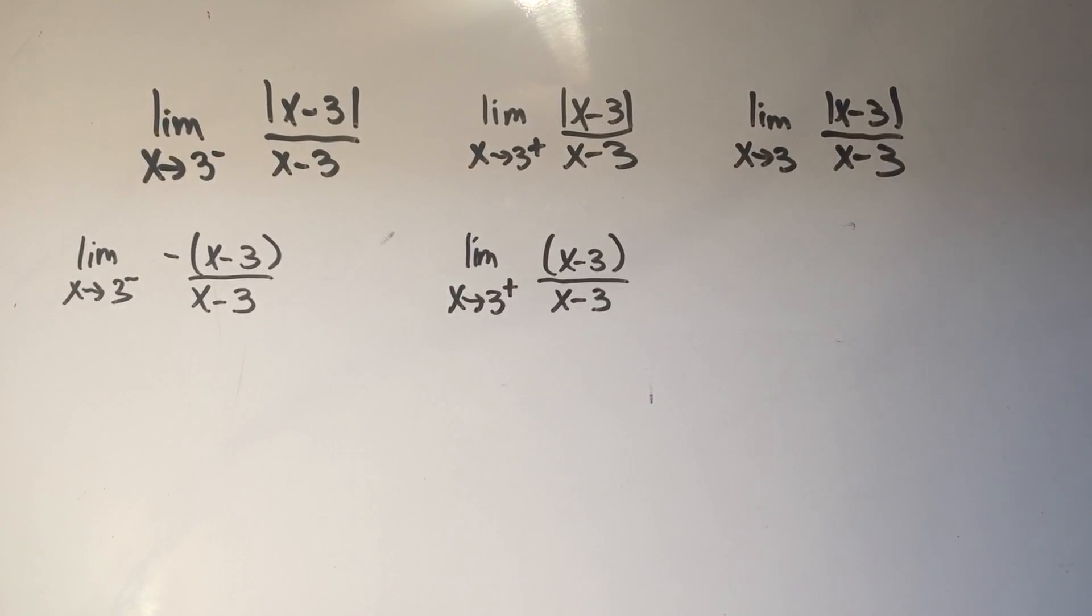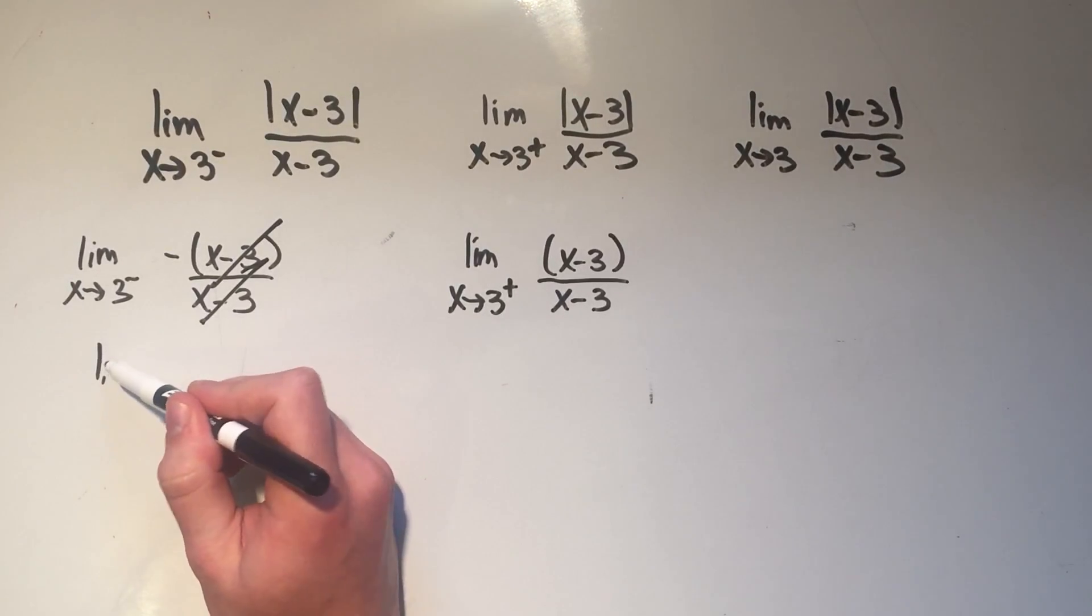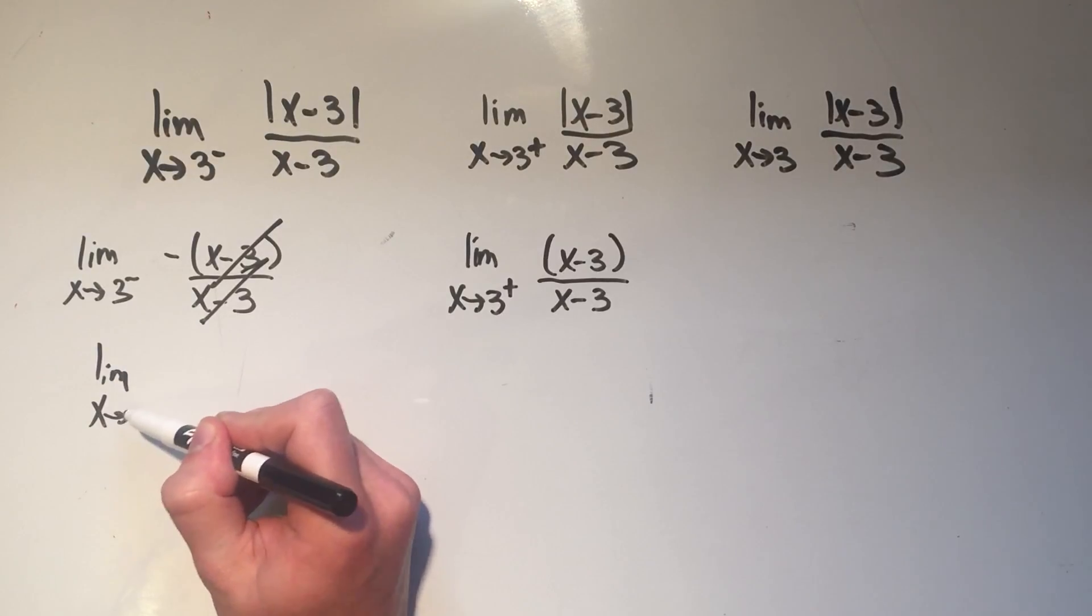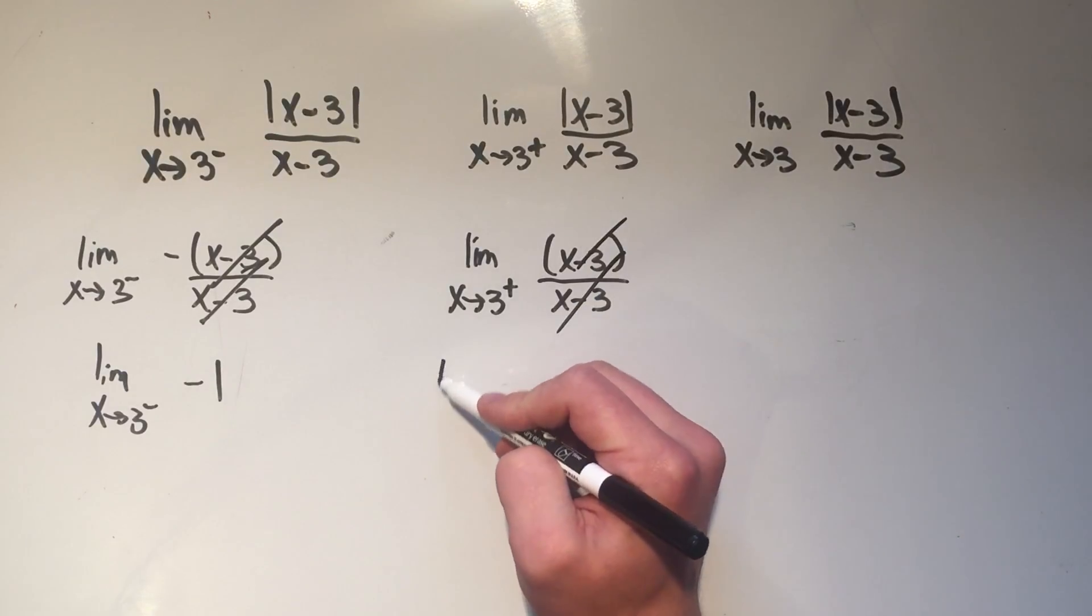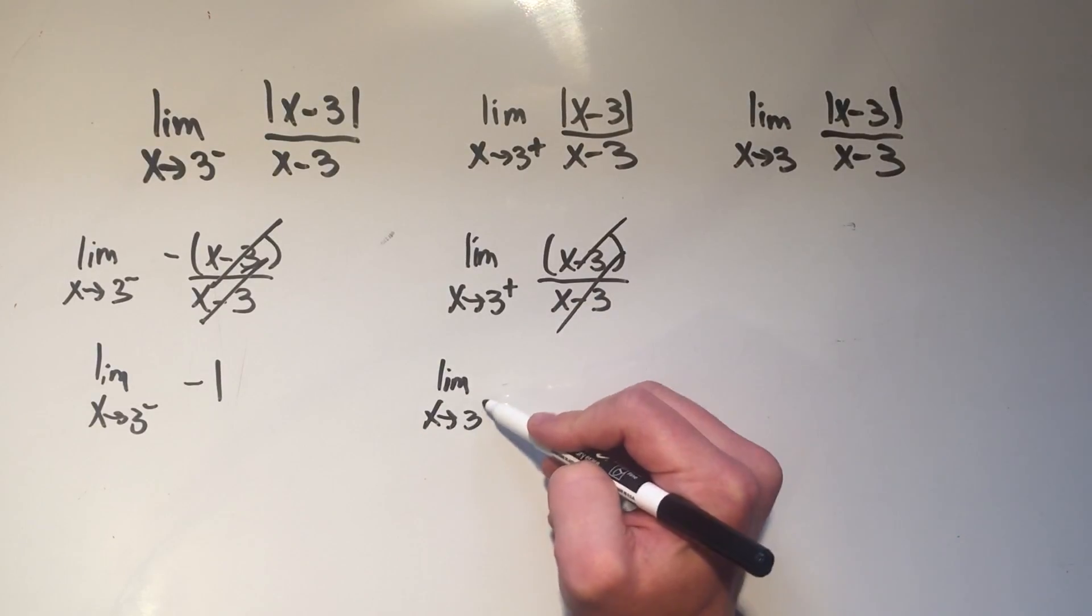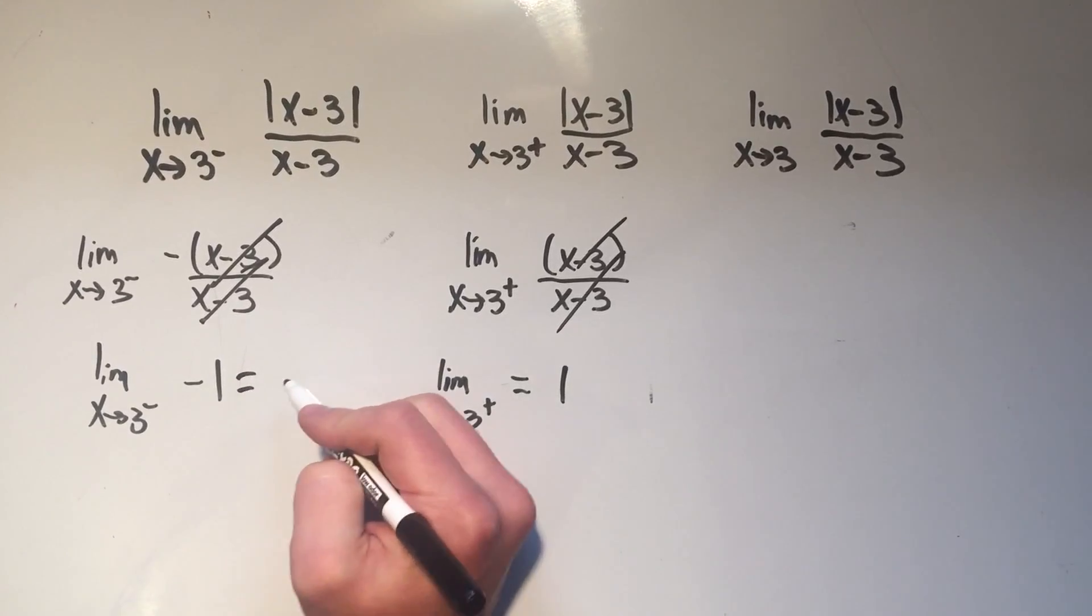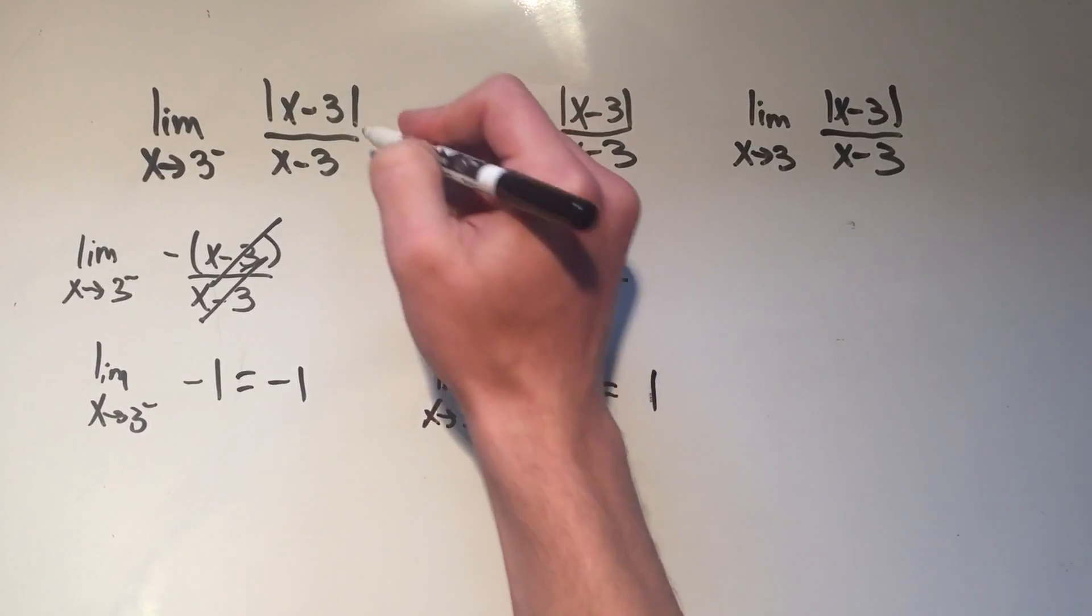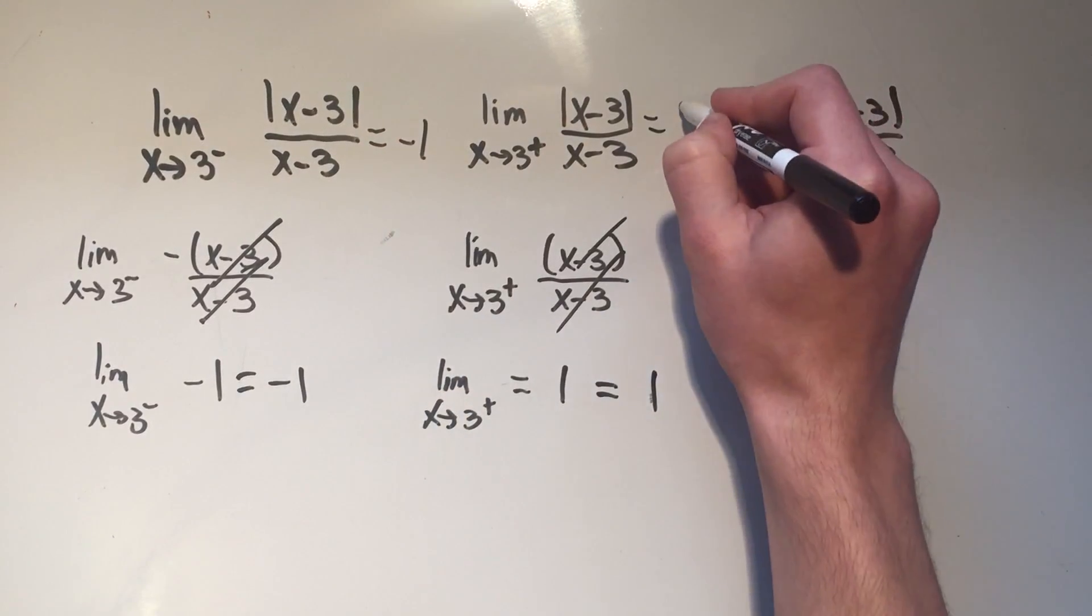And now I can actually cancel these things because they are in parentheses and not absolute values. So this limit I cancel, and I have the limit as x approaches three from the left of negative one. This one I can cancel as well. I have the limit as x approaches three of a positive one. And you know that by the constant law, the limit of a constant is just that constant, which means this answer is negative one, and this answer is positive one.